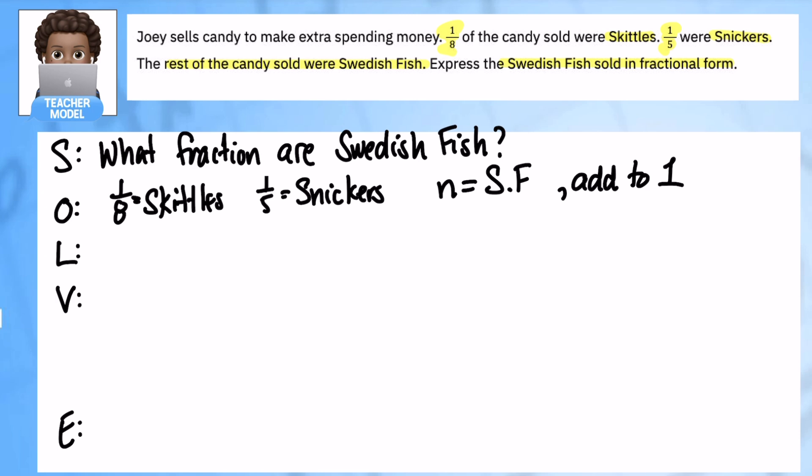This is kind of the same thing that we talked about before, where I'm just going to add. So I'm going to do one minus again, my Skittles and my Snickers, so one eighth plus one fifth. And that's going to give me that number, my Swedish Fish. And I hope you're seeing why, because I have two parts I know already, and I'm just adding those two parts that I know, one eighth, one fifth.